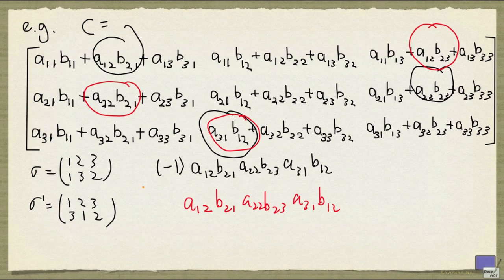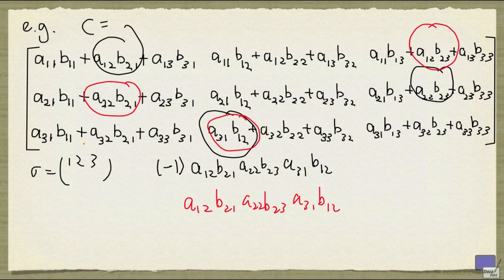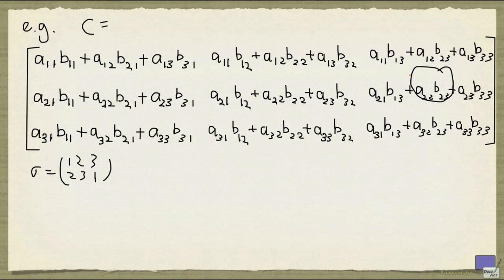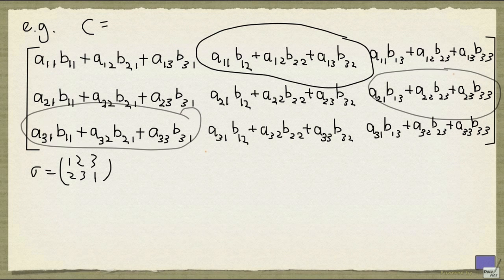Before we look at an explanation, let's just look at another more elaborate example. This time I'm going to look at the term corresponding to the permutation sigma given by this. So the term that corresponds to this will involve the product of these three things, and I'm going to pick the following.